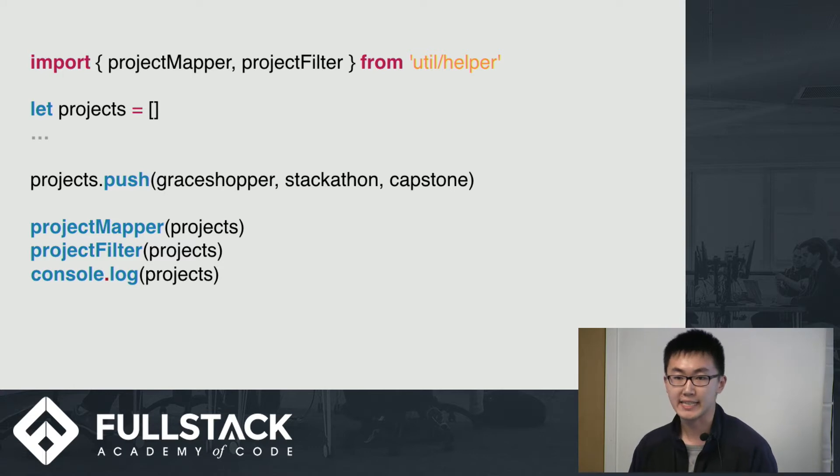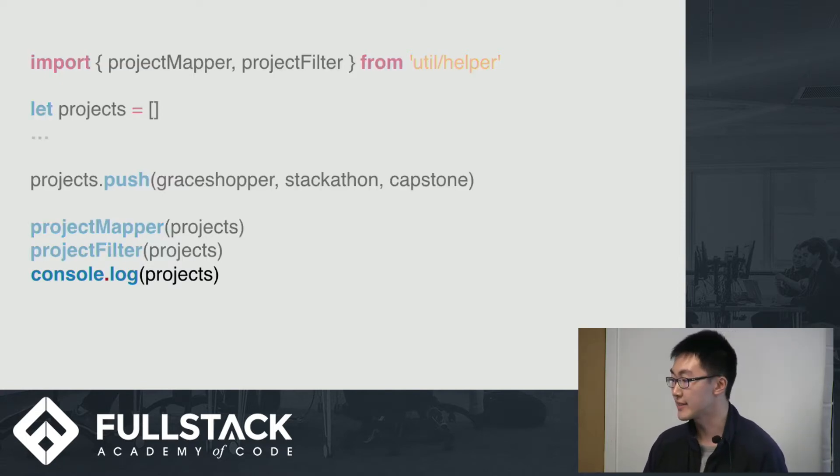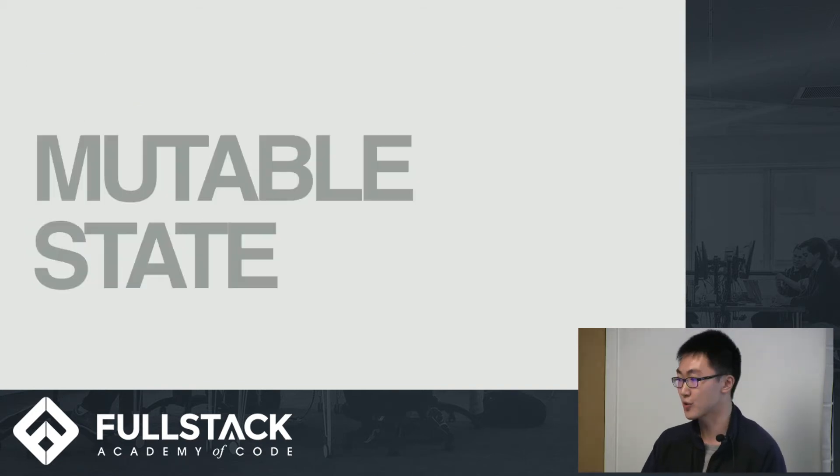I have a project array that contains three elements: StackSong, GridShopper, and Capstone. I plug in two functions and pass my project array into those two functions. What I'm wondering is that after those two function calls, what will my project array be? What can I say about what we will see from this console log? We can say nothing. This project array can now become an empty array, or maybe an array with a million elements. We don't know. And that's one of the biggest challenges in programming, which is mutable state.